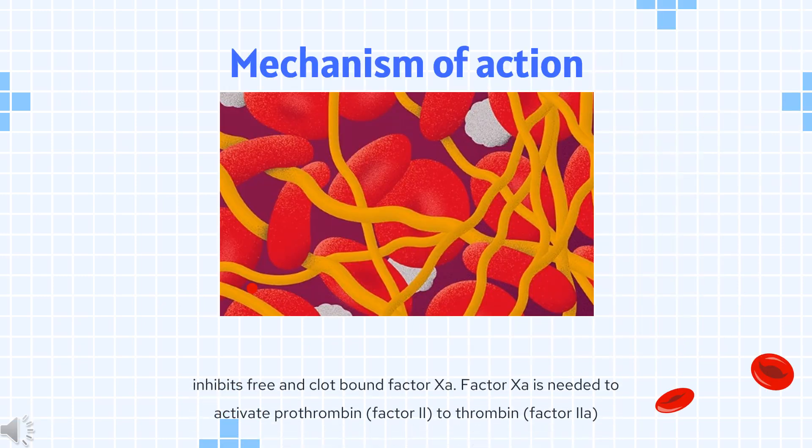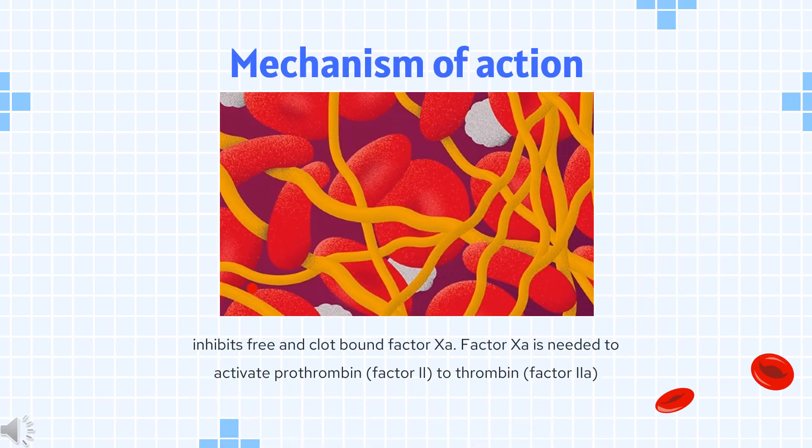Mechanism of Action: Rivaroxaban competitively inhibits free and clot-bound factor Xa. Factor Xa is needed to activate prothrombin (factor II) to thrombin (factor IIa). Thrombin is a serine protease that is required to activate fibrinogen to fibrin, which is the loose meshwork that completes the clotting process. Since one molecule of factor Xa can generate more than 1,000 molecules of thrombin, selective inhibitors of factor Xa are profoundly useful in terminating the amplification of thrombin generation. The action of rivaroxaban is irreversible.